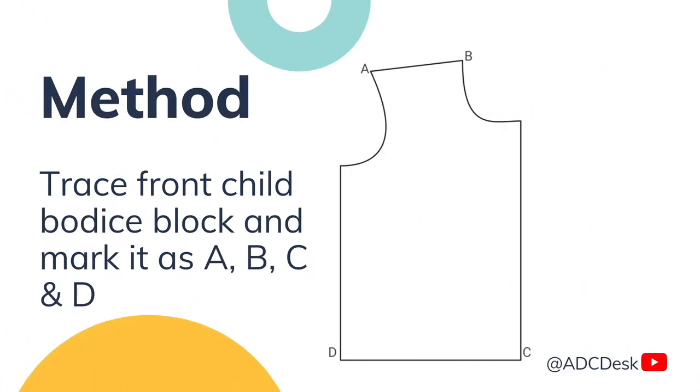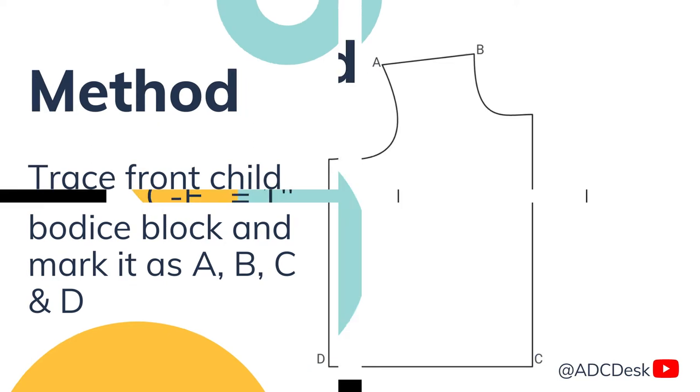First of all, we will trace front child bodice block as you can see and mark it as A, B, C, D in a clockwise direction.